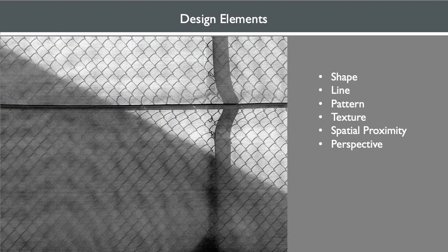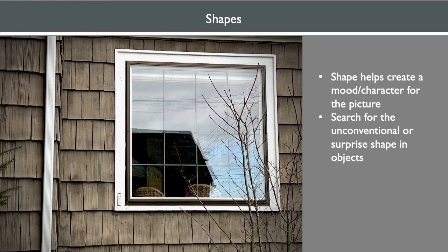Characteristics of a good photo include a combination of design elements, which include shape, line, pattern, texture, spatial proximity, and perspective. Shapes tend to be noticed first before texture and pattern — they help create mood and character for pictures. Search for the unconventional or surprise shape in objects. Lighting is a common means for creating shape through silhouettes, backlighting, or shadows. Explore tilt and angle to allow shapes to be a dominant part of the composition.